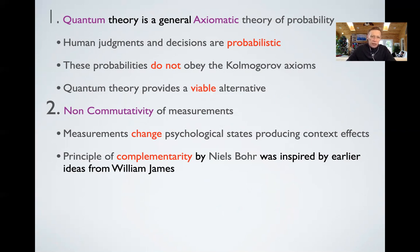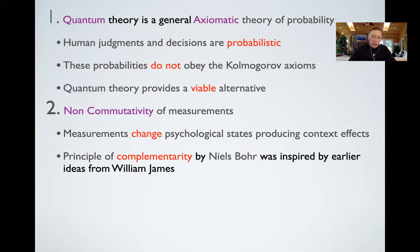This change produced by measurement produces context effects that create non-commutativity. In fact, Niels Bohr used the idea of complementarity in physics — the idea that we can't measure something simultaneously, but both measurements are required to understand the phenomena completely. Some of these ideas of complementarity were actually inspired by the earlier psychologist William James. And so we're trying to bring complementarity back to psychology. These principles of non-commutativity and complementarity are common in both physics and in psychology.